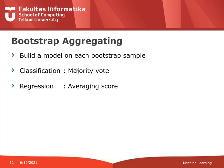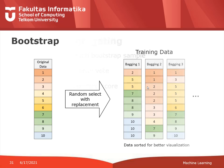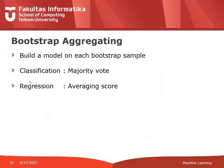What we do after training depends on the problem type. If it is a classification problem, we run a majority vote — the result with the highest number of votes from these models will be selected. For regression, we average the scores of all the models, since the output of regression is a number.